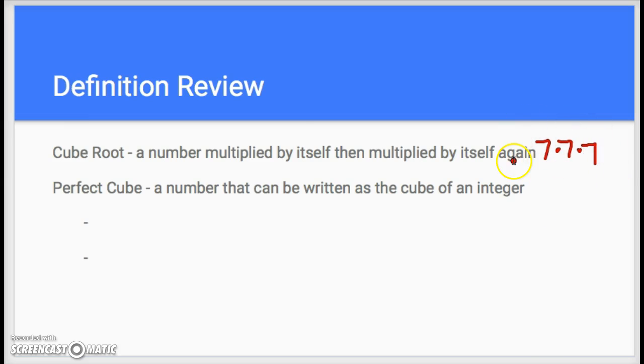The next one I want to talk about is what's called a perfect cube. A perfect cube is any number that can be written as the cube of an integer.